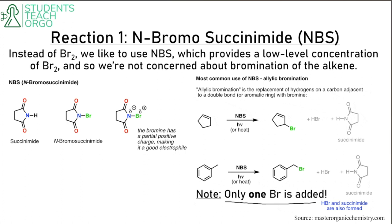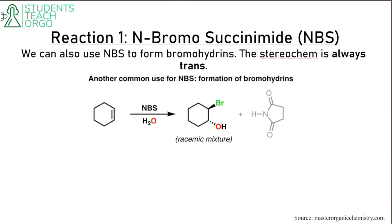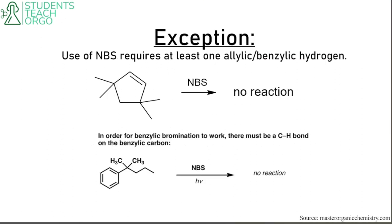We can also use NBS to form bromohydrin — that's NBS with water — giving a racemic mixture where the stereochemistry is always trans. The exception is that you need at least one allylic or benzylic hydrogen; otherwise the reaction won't occur, because the bromine is going to swap places with a hydrogen. More accurately, you're forming a radical from that carbon-hydrogen bond. No reaction will occur if there is no allylic or benzylic hydrogen present.